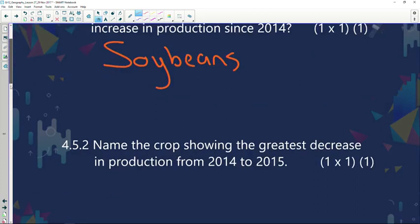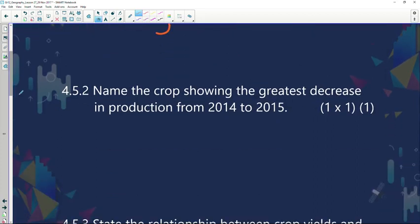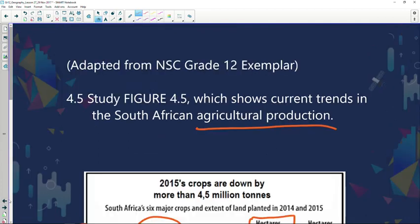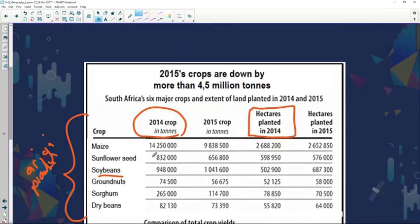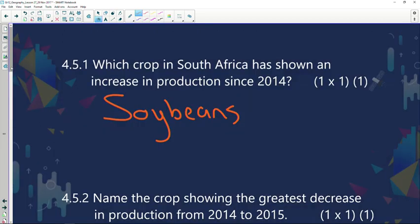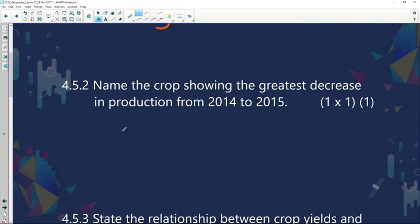Now if you look at our next question, from the table name the crop showing the greatest decrease in production. Let's quickly go back. Now maize has dropped almost by five million tons. Sunflower only 200,000. If we go there 200,000, definitely maize, almost by five million tons. That's incredible, that's a lot of maize. And you know that's the staple food for the South African population, so definitely maize.